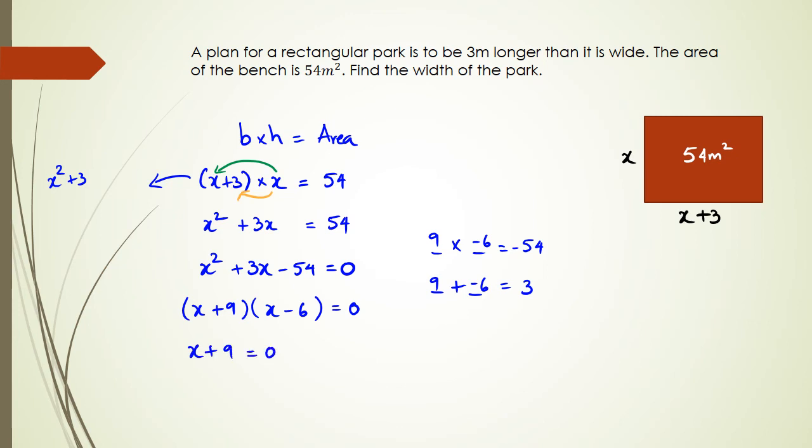So we've got x+9 = 0 or x-6 = 0. On the left hand side we've got x = -9, or x = positive 6. In this particular question, you've got to see whether your answers actually make sense. Can you have a negative value for the width of your rectangular park? You can't, so we're going to ignore x = -9 and write a little statement. Width of park is 6 meters.